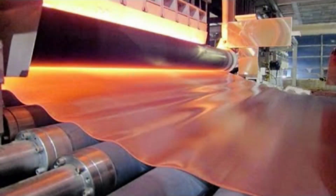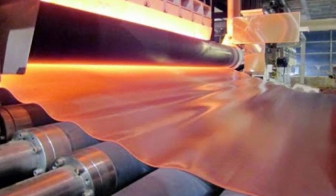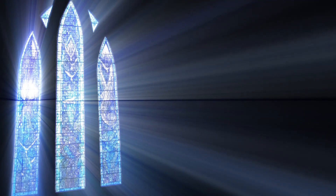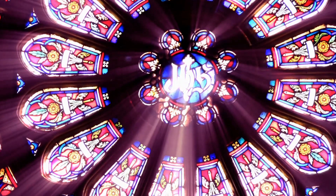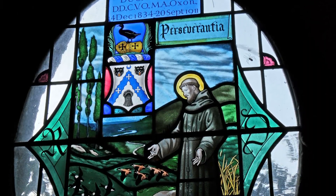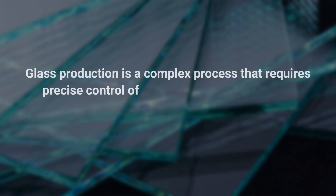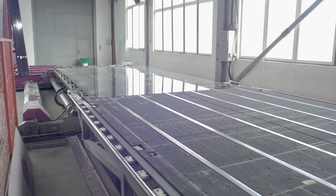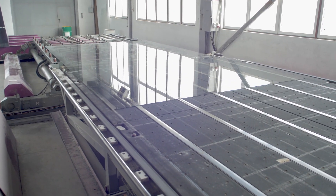Rolled glass is similar to float glass, but the glass is cooled and solidified while passing through rollers, giving it a slightly curved or rolled shape. Stained glass is used to create decorative glass objects with a variety of colors and patterns; the glass is cut into desired shapes and painted or coated with metallic oxides, then assembled into the finished product. Glass production is a complex process requiring precise control of raw materials, temperature, and timing, and the process used is determined by the type and intended end use of the glass.